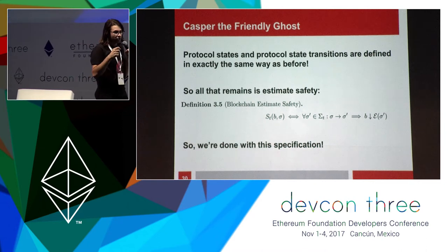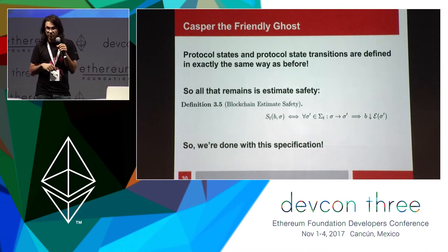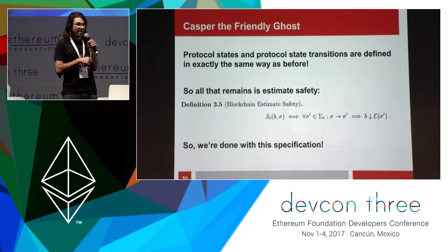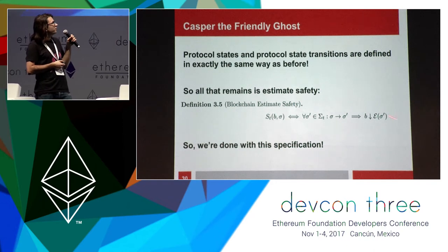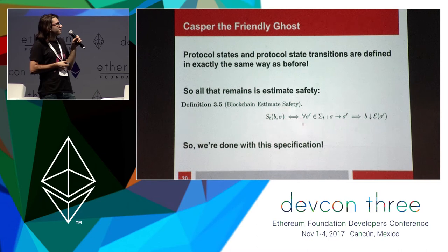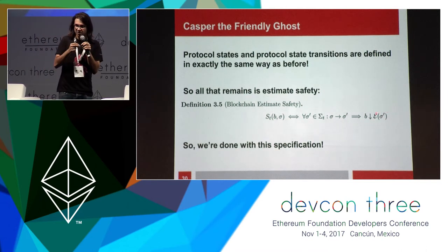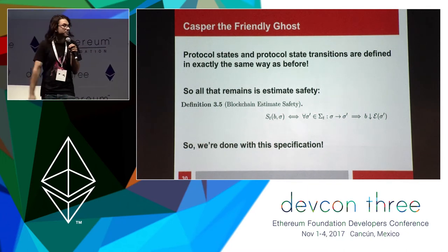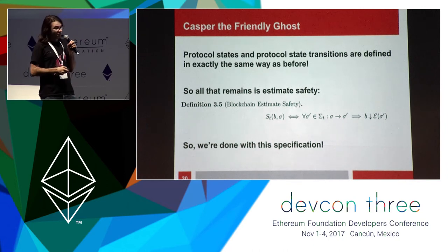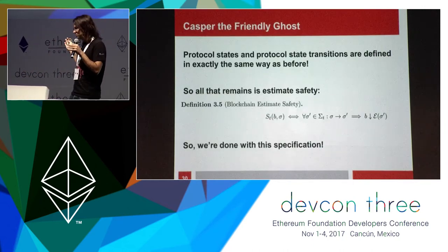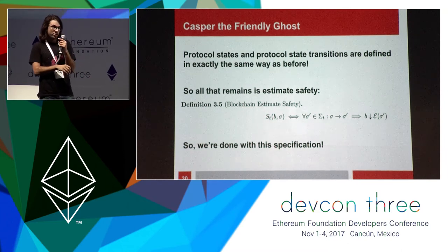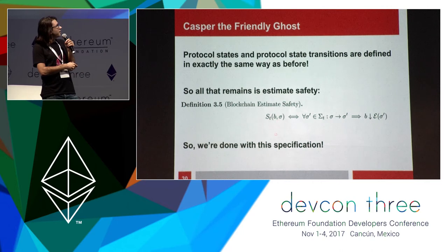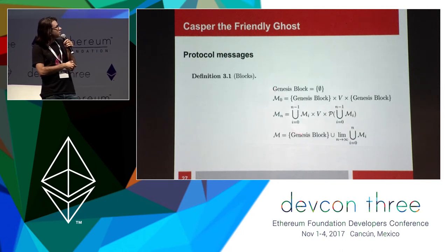Protocol states and state transitions are defined exactly as before — literally no change. We detect Byzantine faults the same way, define protocol states as sets of messages with less than some faults, and state transitions as supersets. Estimate safety for the blockchain means that for all future protocol states, the block is in the blockchain chosen at those future states. A block is safe if in all future fork choice rules you make, that block will be in there. We got to benefit from all the work done earlier — we only had to redefine the message type, the score of blocks, the fork choice rule, and safety.